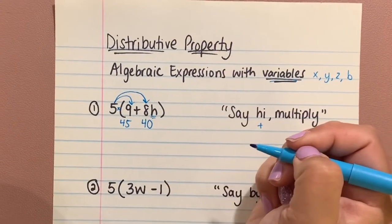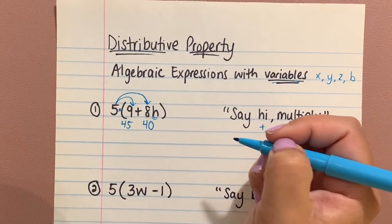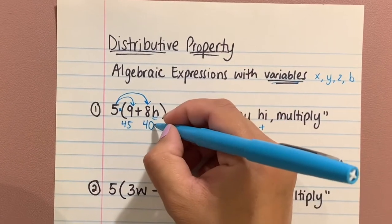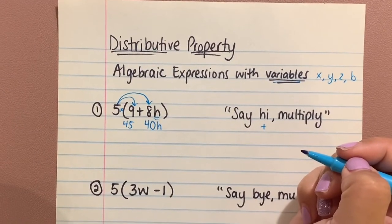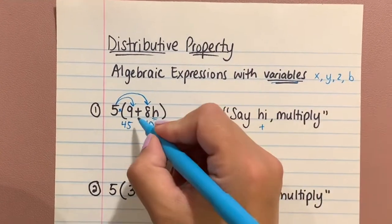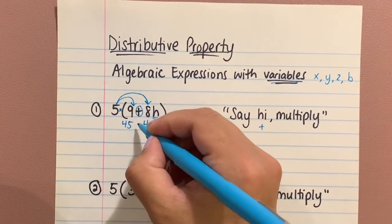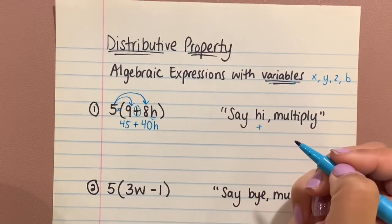But that eight has the little H attached to it, and the H always wants to stay with the eight. So I'm just going to bring the H down with that 40 because it's going to stay right there with it. And since it's 'say hi, multiply' with a plus sign, I'm going to bring that down.